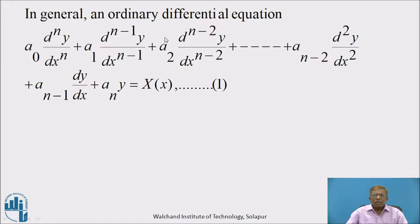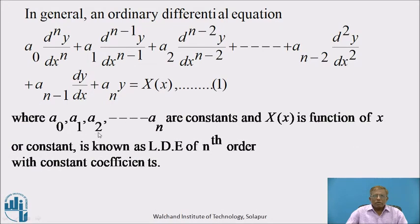In general, an ordinary differential equation A₀(dⁿy/dxⁿ) plus A₁(dⁿ⁻¹y/dxⁿ⁻¹) plus A₂(dⁿ⁻²y/dxⁿ⁻²) plus and so on plus Aₙ₋₂(d²y/dx²) plus Aₙ₋₁(dy/dx) plus Aₙ·y equals X(x), denoted by equation 1, where A₀, A₁, A₂, ..., Aₙ are constant coefficients and X(x) is a function of x or may be a constant, is known as a linear differential equation of nth order with constant coefficients.